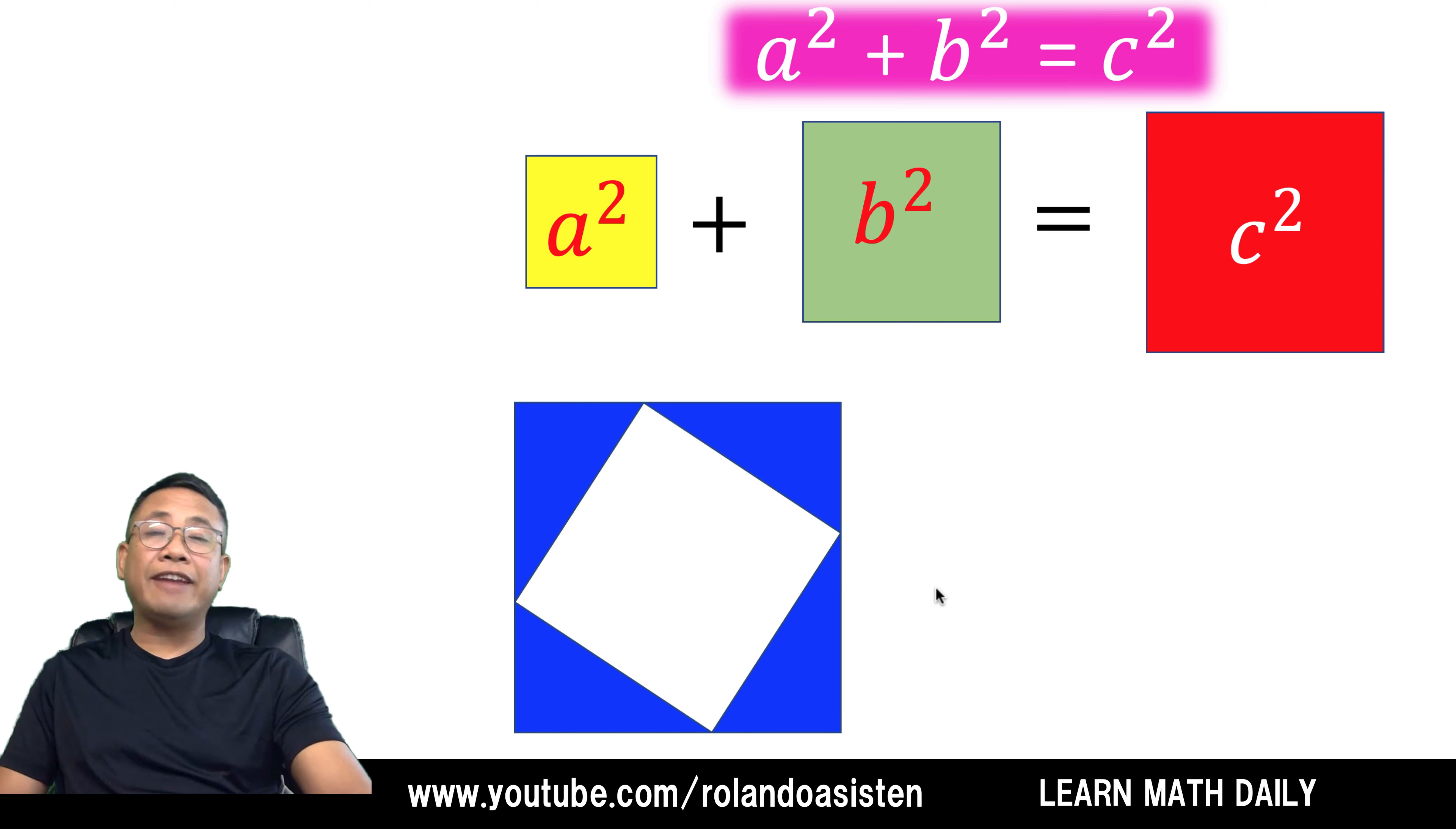The idea behind this visual derivation is we are going to fit this C squared in this hole, and we are going to challenge ourselves to fit also the combined areas of A squared and B squared into the same hole. Let's do that.